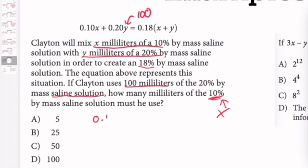So if I get 0.10, I'm just going to rewrite the equation here. This becomes basically 20y, sorry, just 20 is equal to 0.18x plus 0.18y.